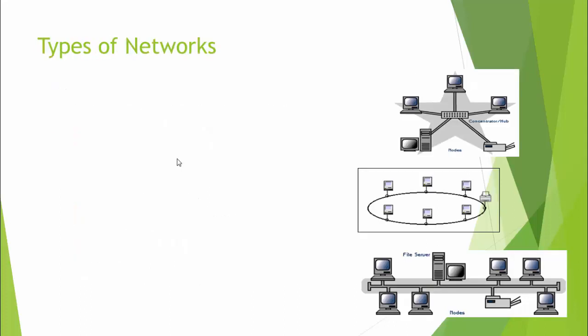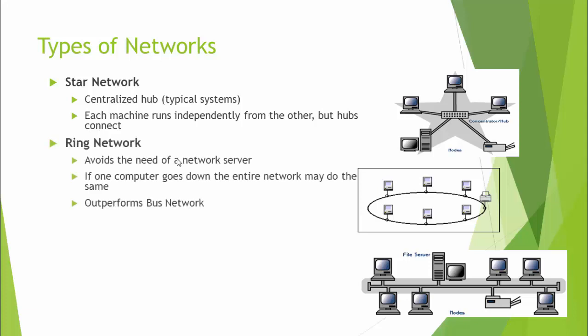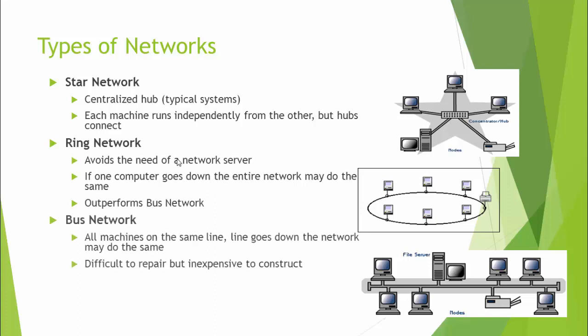So there are lots of benefits to having a network. Network architecture for the most part these days tends to be a star network with a centralized hub, in which each machine runs independently from the other ones but they're connected through a hub. In the past, it was more common to see things like ring and bus networks, that avoided the need of a network server but had the problem of being hard to keep up all the time.